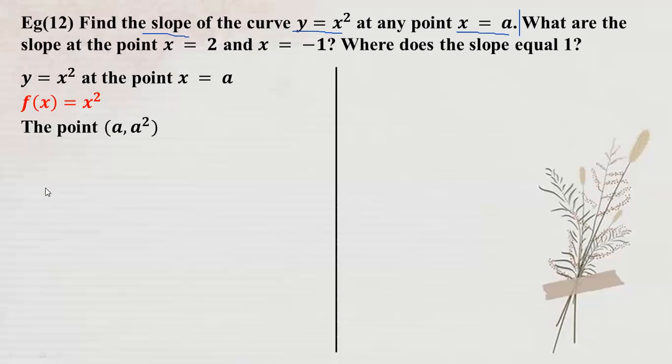So we can see M is equal to the limit as h approaches 0, of f(x₀ + h) minus f(x₀), divided by h. This is the first definition of the derivative.